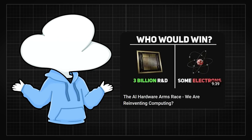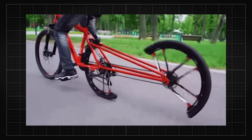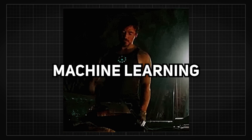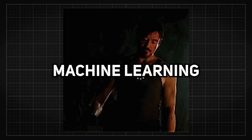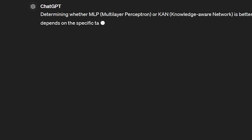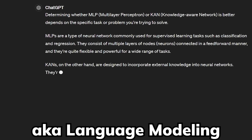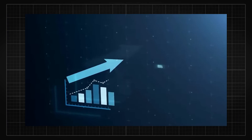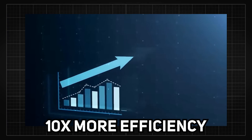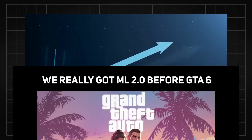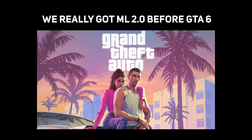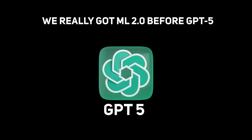The other day I was just talking about how people are reinventing computing for AI, and just days after, we got something that looks like machine learning is about to be reinvented too. If this new paradigm works on sequential data, we are looking at around 10 times more efficiency than what we currently have for large language models. So we got machine learning 2.0 before GTA 6 — I mean GPT-5.